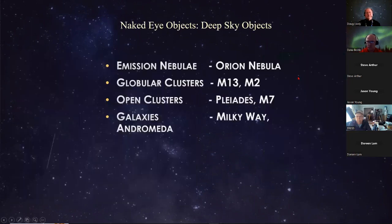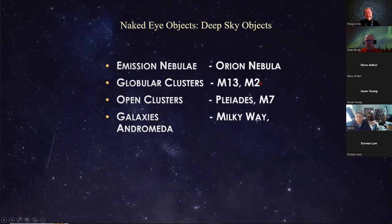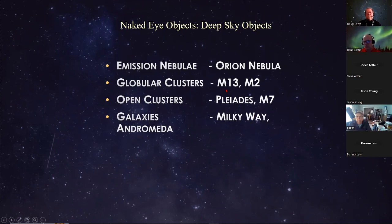There are also some deep sky objects you can actually see with the naked eye. The Orion Nebula is actually a naked eye object. Some places you could still see M13, M2, and some open clusters. You can still see M7, the Pleiades, and you used to could see the Milky Way, although now with light pollution growing, it becomes much more difficult to see these things. Andromeda you can still make out if you know where to look, but even that is getting washed out by the lights.